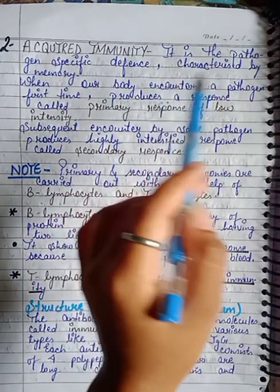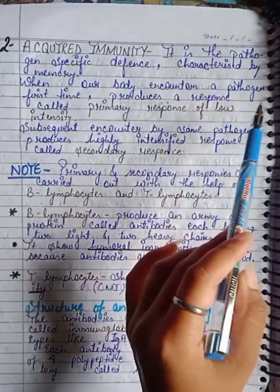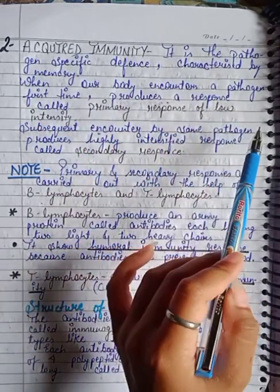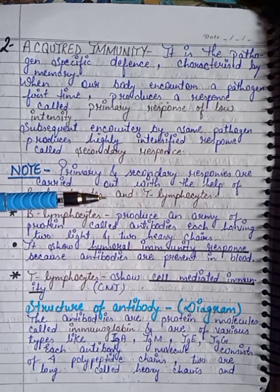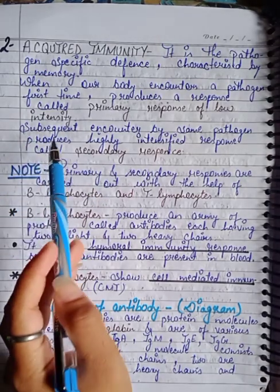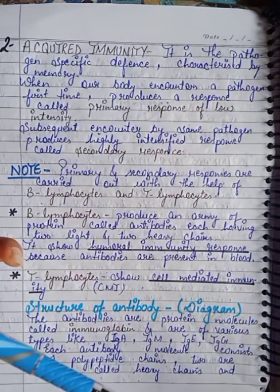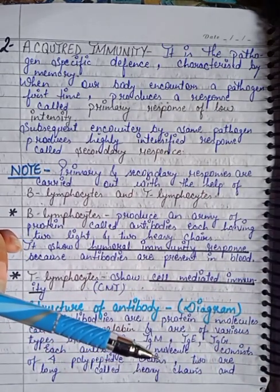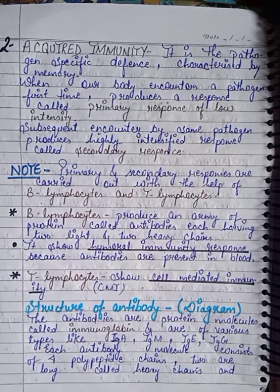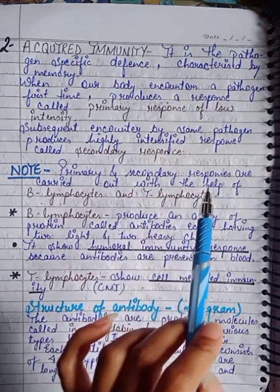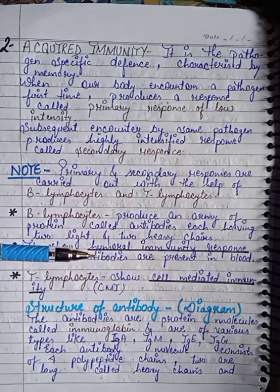Second is acquired immunity. It is a pathogen-specific defense characterized by memory. When our body encounters a pathogen for the first time, it produces a response called the primary response, which is of low intensity. Subsequent encounter with the same pathogen produces a highly intensified response called the secondary response. These primary and secondary responses are carried out with the help of B lymphocytes and T lymphocytes.